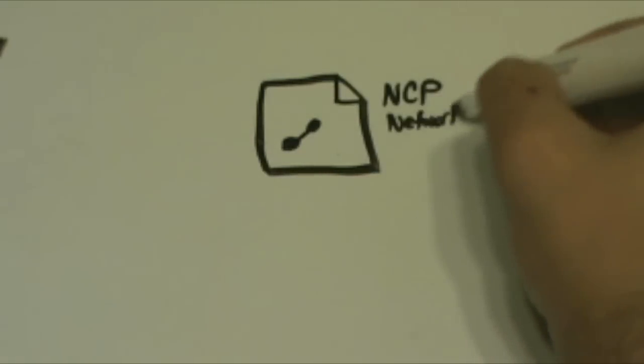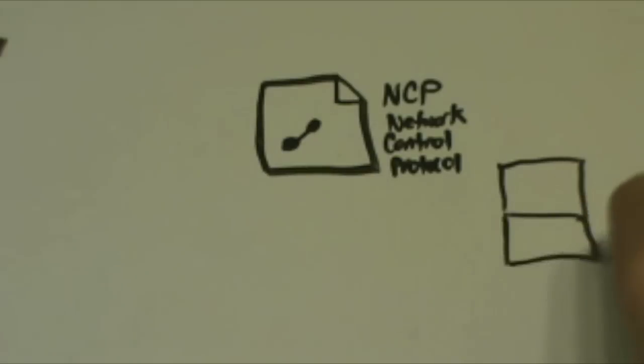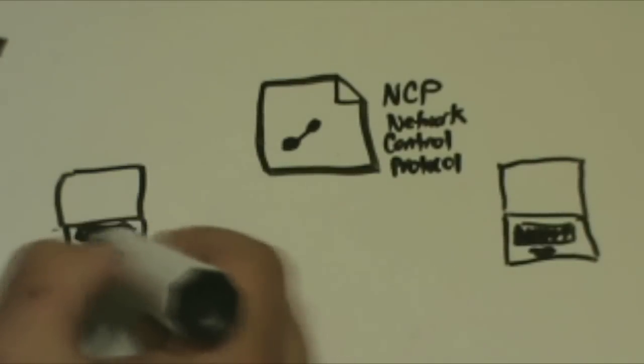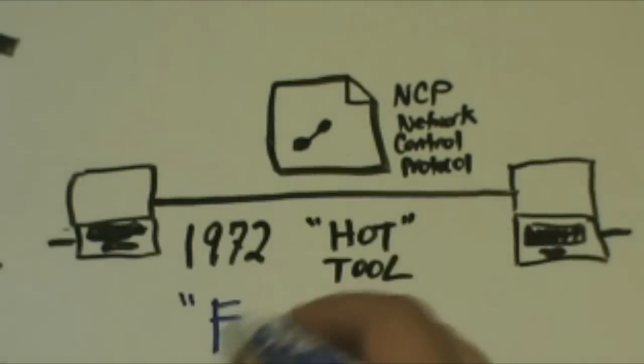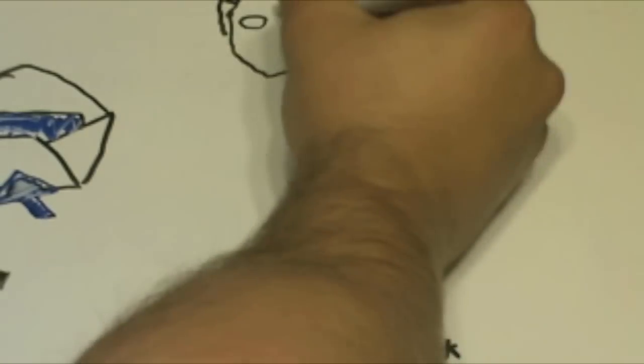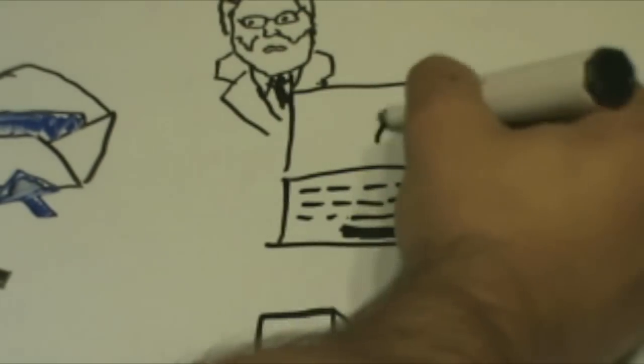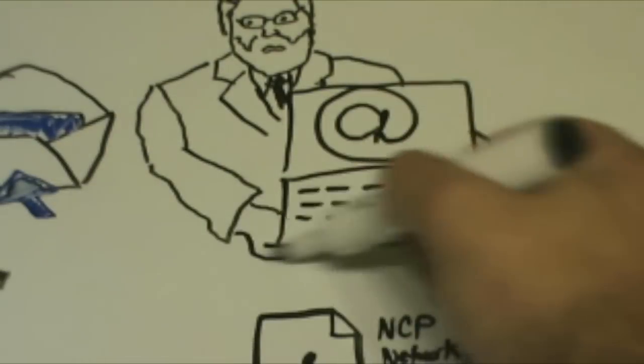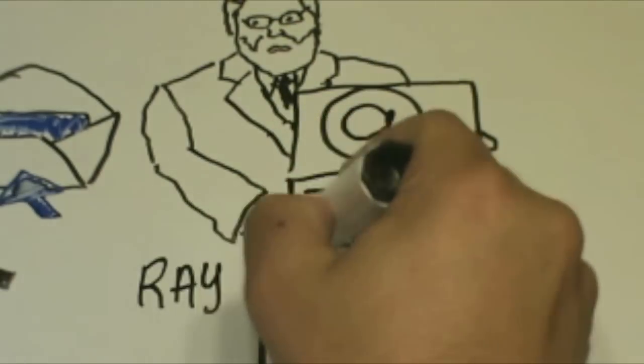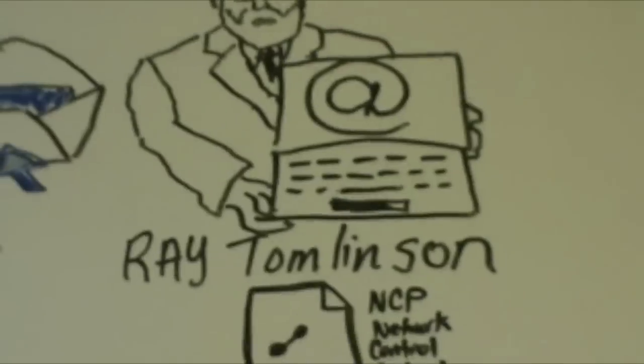In October 1972, ARPANET was shown to a large audience and a very hot tool that the network could use called email was introduced. ARPANET email was pioneered in March 1972 by Ray Tomlinson at BBN. Email was a fantastic advancement in communication over the phone and allowed the early creators of the Internet to discuss and document in great detail the actual development of the network.